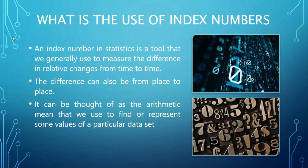What is the use of index numbers? An index number in statistics is a tool that we generally use to measure the difference in relative changes from time to time. The difference can also be from place to place. It can be thought of as a geometric mean that we use to find or represent some values of a particular data set.